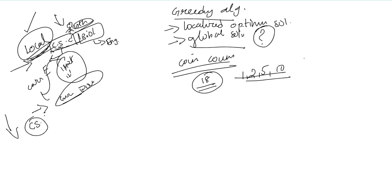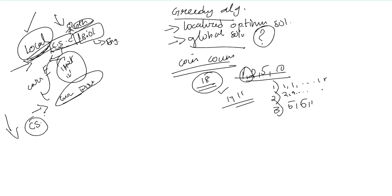If we want to achieve the solution, we get the solution for each step. According to the greedy algorithm, in Step 1, we will pick the largest coin first. The largest coin is 10. So we pay 10, and now we find the remaining balance.